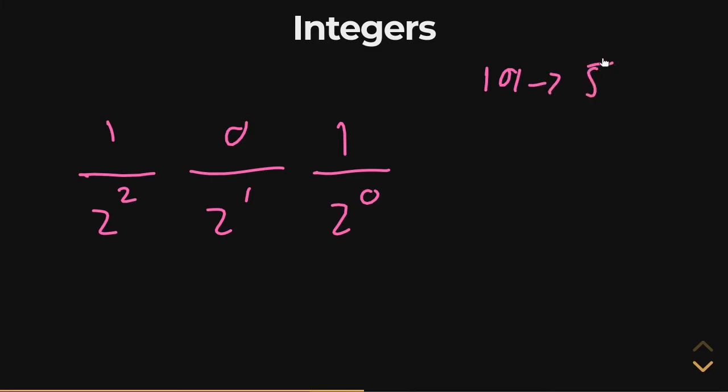What if we had a slightly different number? What if we had zero, one, zero? Zero, one, zero. Well, this is just the opposite. And so this is zero. This is zero. We only have a one here. Two to the one is two. So the three-bit integer zero, one, zero is just two.